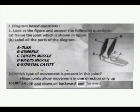Which type of movement is present in the joint? This joint allows movement in one direction only, up to 180 degrees. It moves up and down, or backward and forward.